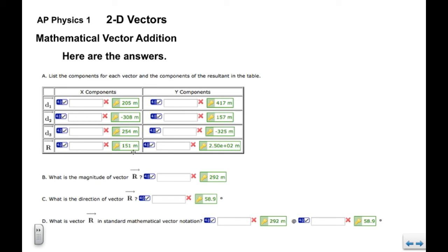Again, make sure that your calculator is in degrees mode whenever you're adding vectors. We end up with positive components for rx and ry. That means that the vector is in quadrant one. Pythagorean theorem gives us 292 meters for the magnitude of the vector, and then the direction when we do inverse tangent we get 58.9 degrees.